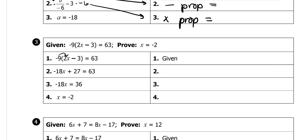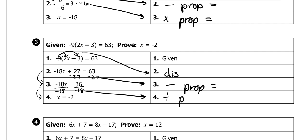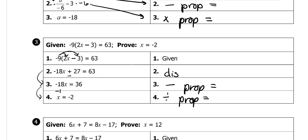On this one, the first thing we did is distribute, so that's the distributive property. Then to get from step 2 to step 3, we subtract 27 from both sides, which is the subtraction property of equality. Then to get from step 3 to step 4, you divide by negative 18, which is the division property of equality. None of that extra work should actually be shown — I write it there so you can see why these are the answers.